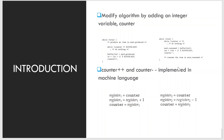The consumer also checks whether the counter value reaches 0. Although the producer and consumer routines are correct separately, they may not function correctly when executed concurrently. For example, suppose the value of counter is currently 5 and the producer and consumer concurrently execute counter++ and counter--. Following the execution of these two statements, the value of counter may be 4, 5, or 6.